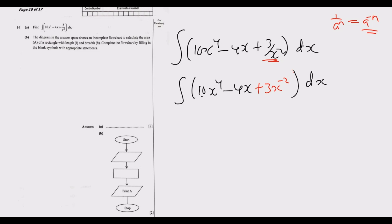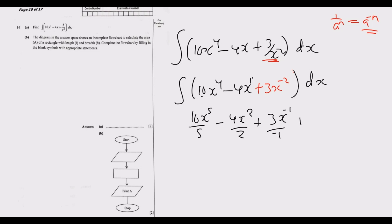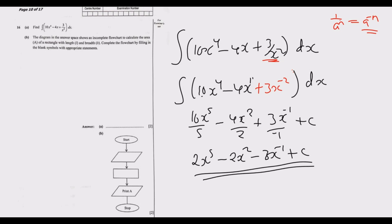Applying the integration rule — add 1 to the power then divide by the new power — we get: 10x⁵/5 - 4x²/2 + 3x⁻¹/(-1) + C. Simplifying: 2x⁵ - 2x² - 3x⁻¹ + C. This is our indefinite integral and the answer to Question 16a.